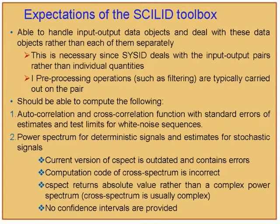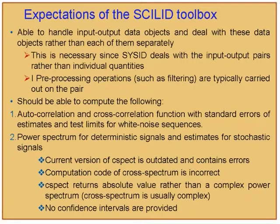After doing this, the toolbox should be able to compute the autocorrelation and cross-correlation functions, which are currently lacking in Scilab. Presently there is no explicit tool to compute an autocorrelation function or a partial autocorrelation function. There is one cross-correlation command, but it is still not up to the mark in my opinion. These are technical terms, and I am conveying this to the Scilab team because this is an appropriate forum.